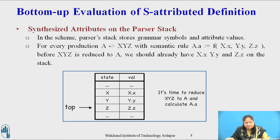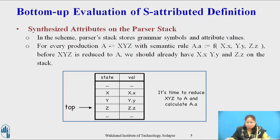If a symbol has no attribute, then the corresponding entry in the val array is undefined. After the reduction step, top is decremented by 2. So the state covering A is put in state[top] where X was, and the value of synthesized attribute A.a is put in val[top]. Here capital letters represent non-terminals while small letters represent the attribute values corresponding to the non-terminals.